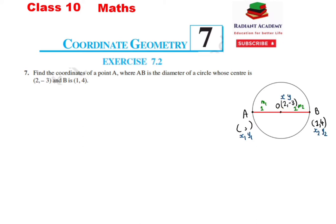Center se pass hone ke kaaran, jo A se O ka distance hoga wahi distance O se B ka hoga, kyunki center se agar hum circumference ko kisi bhi point ko touch karen toh radius hota hai. Yah point bhi radius hota hai, toh yah jo dono distances hain woh same hain. Isi basis par hamein ratio milta hai — ratio kya hoga: 1 is to 1. Toh M1:M2 is 1:1, toh hamare paas ratio bhi hai.